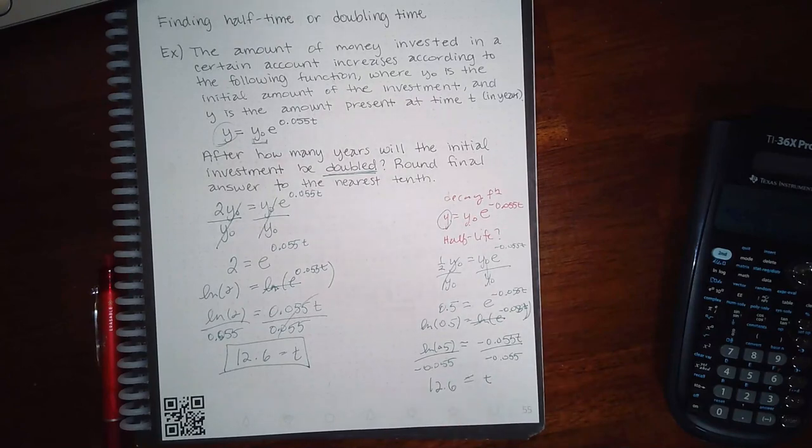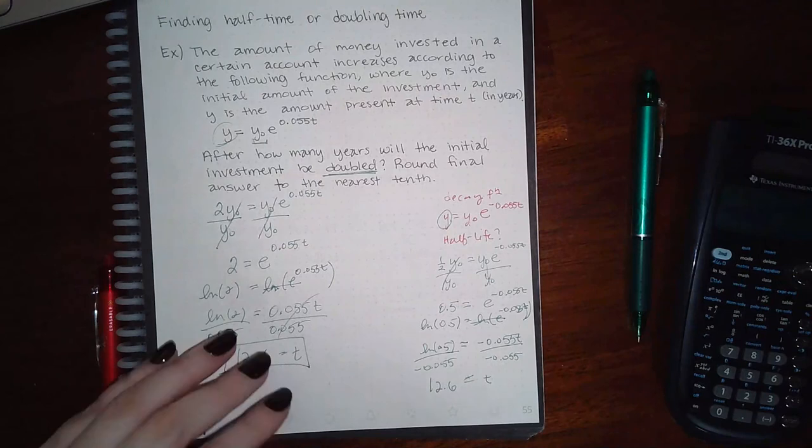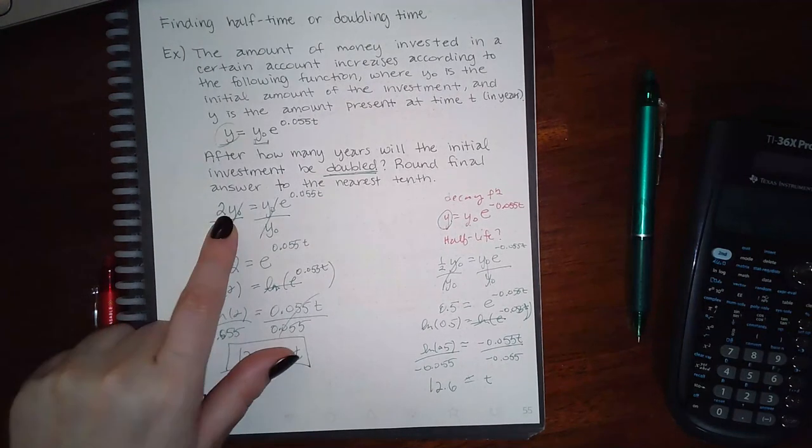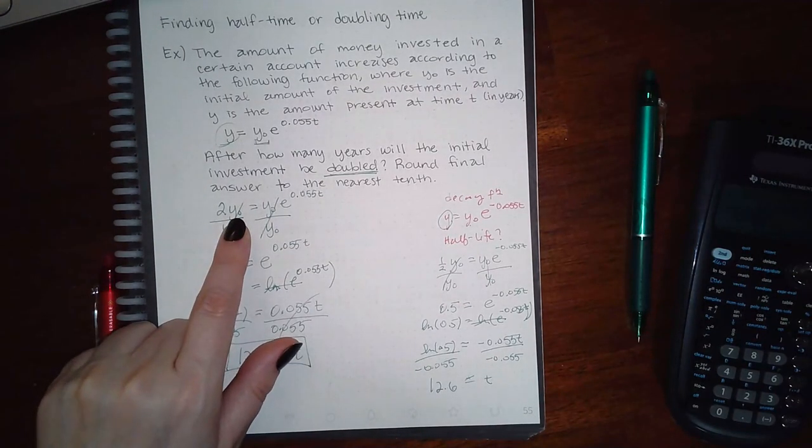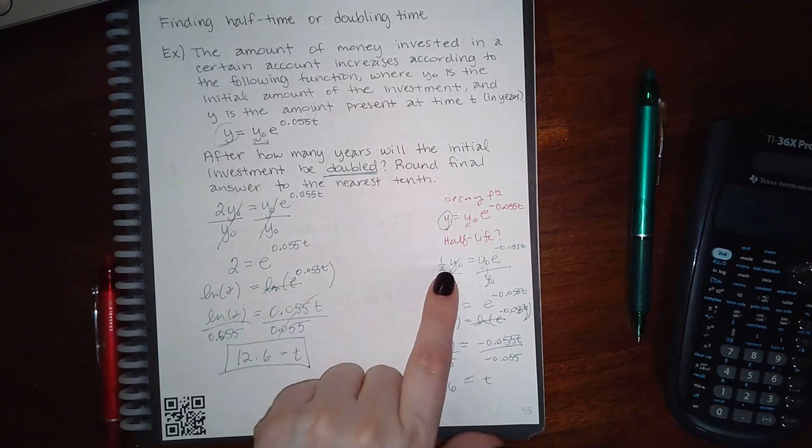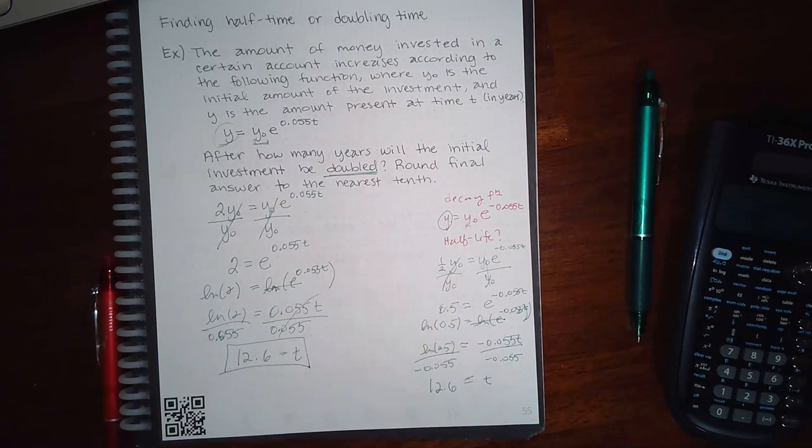Okay, so make sure you're doing two times y₀ for double, and you're using one-half of y₀ for half-life.